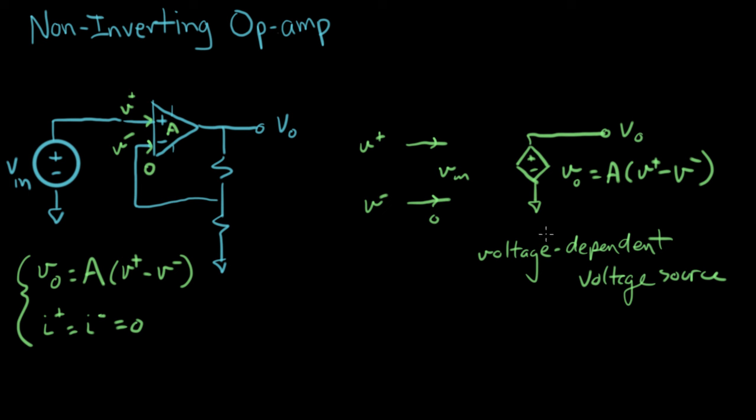So I'm going to take a second here and draw the rest of our circuit surrounding this model, but I need a little bit more space. So let's put in the rest of our circuit here. We had our voltage source connected to V plus, and that's V in.